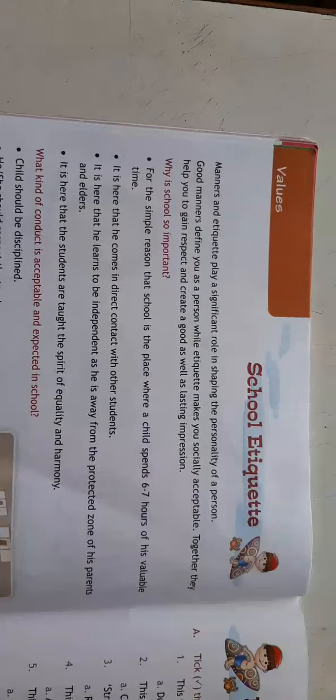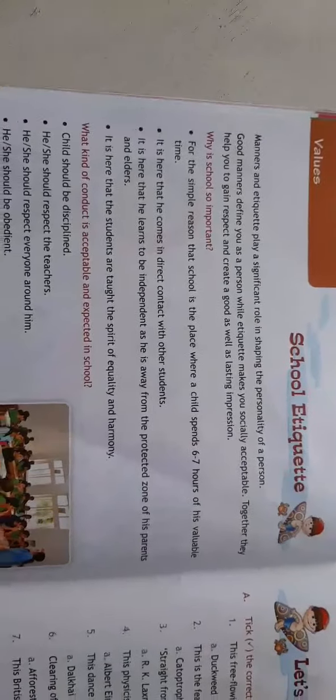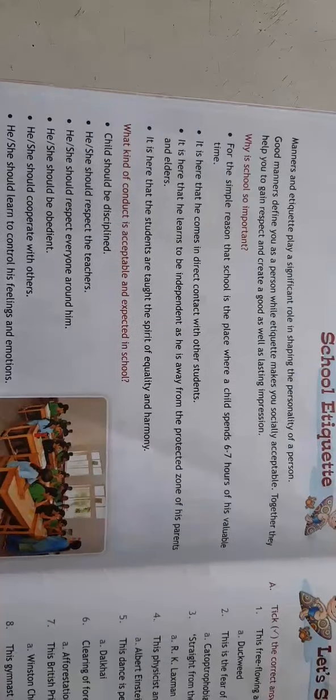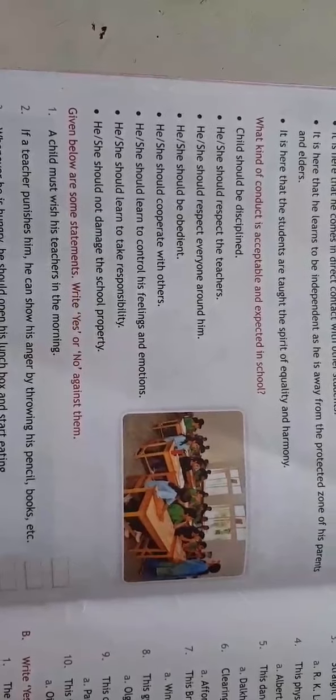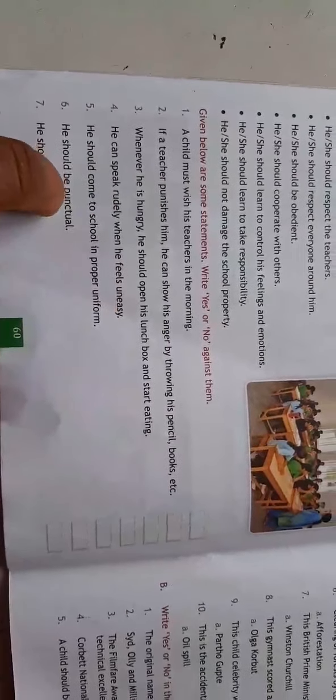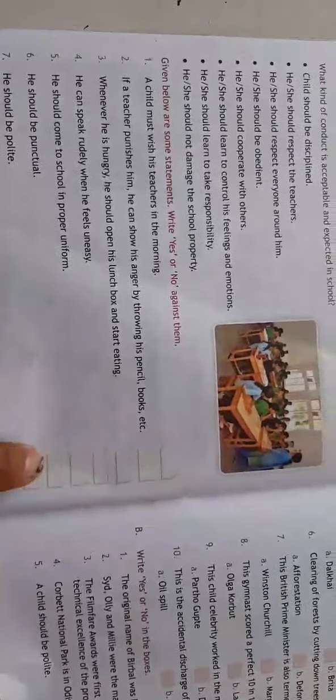Hello children. Here some school etiquettes are being given. These are for values. Why school is important. We are at home, we know how important school is. Then, what kind of conduct is accepted and expected in school, we all know. We are obedient, respectful. And on that basis there are certain yes and no, these you have to do it yourself. When you are reading it, you try to find out what is the answer in all these cases.